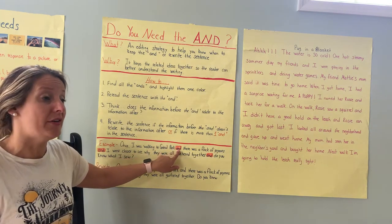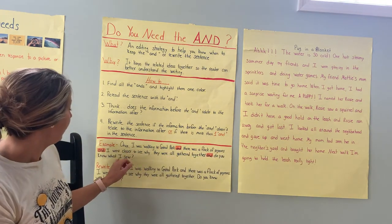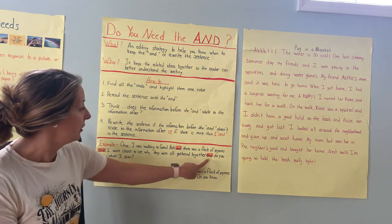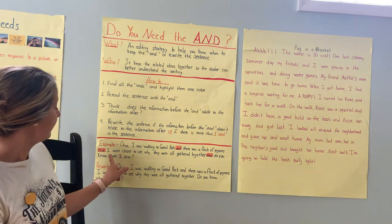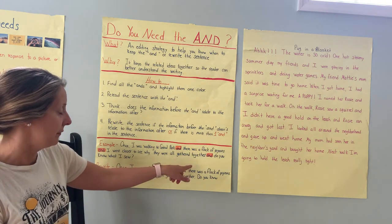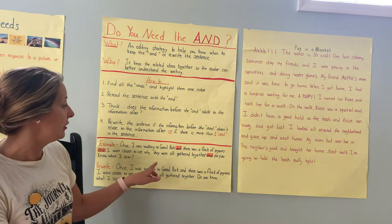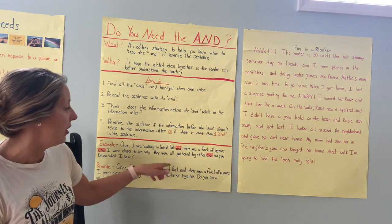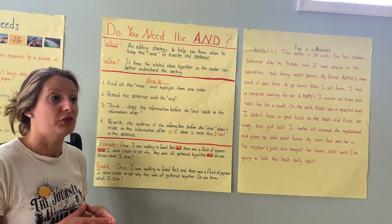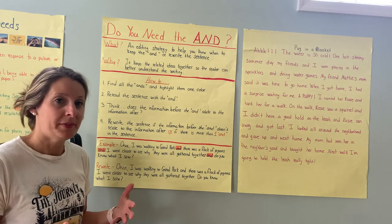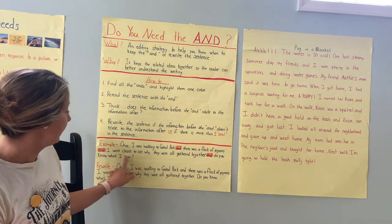Now remember, I said you shouldn't have more than one and in your sentence. So because I have two more, I'm going to put a period there when I go to rewrite, and I'm going to ignore that and. Then I'm going to look at the next two parts and see if I want to keep that and or rewrite. This says: 'I went closer to see why they were all gathered together. Do you know what I saw?' I think they kind of go together because they're talking about what they saw and why the pigeons were all gathered together. But I feel that the question needs to stand alone so that it draws in the reader's curiosity — I want it to be more powerful and more engaging for the reader. So I'm going to put a period after the word 'together' and make this question stand on its own as a separate sentence.